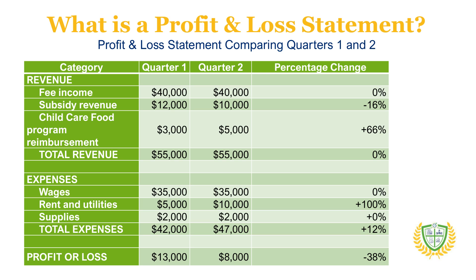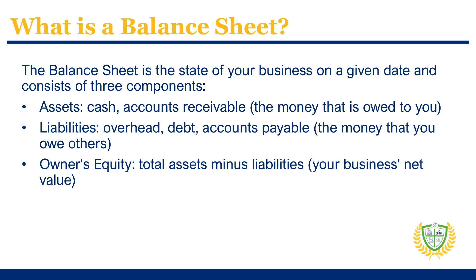Let's look at a more detailed example from Luisa's child care business. Here is her P&L for quarters one and two. By comparing the two quarters, Luisa can learn some interesting things: her revenue stayed the same from quarter one to two, however her expenses went up by 12%, resulting in a profit that was 38% lower. Looking at the expenses, Luisa found that her rent and utilities doubled. She had no explanation as to why, but once she investigated, she found that a broken pipe was leaking and running up her water costs.